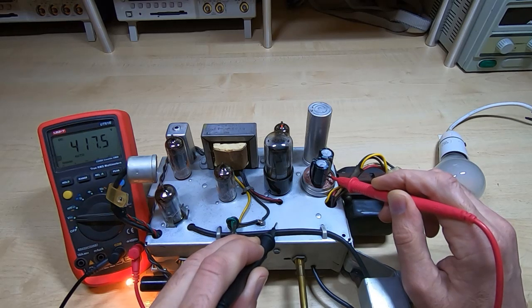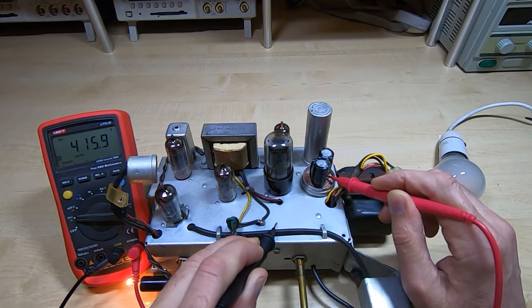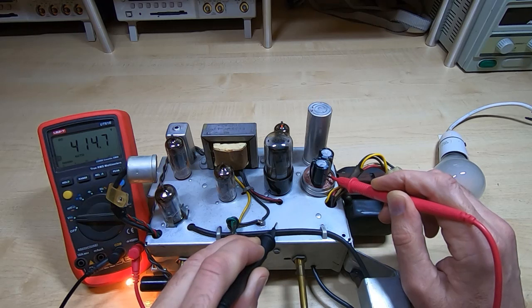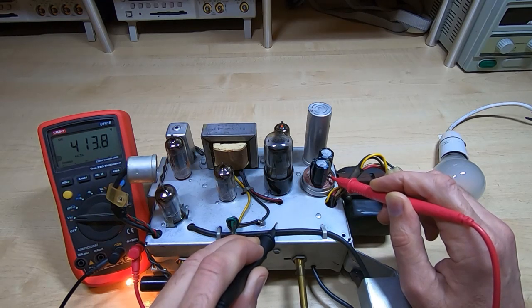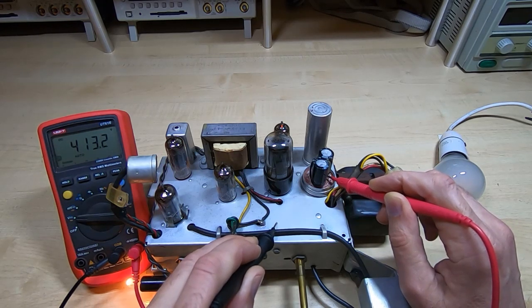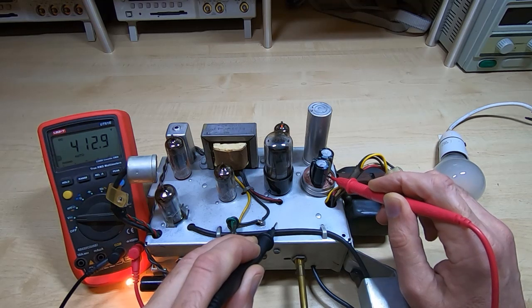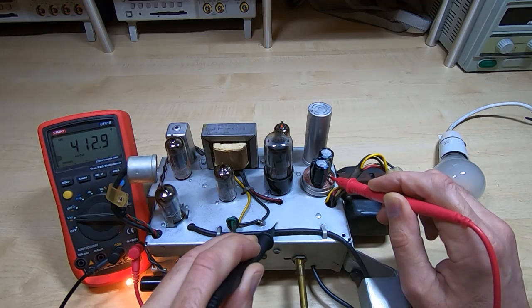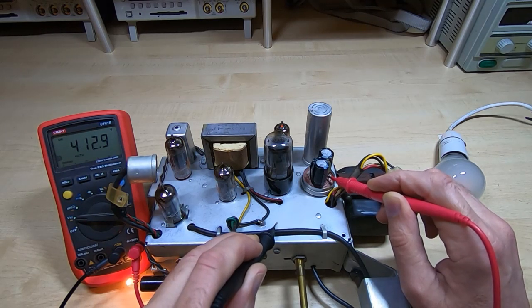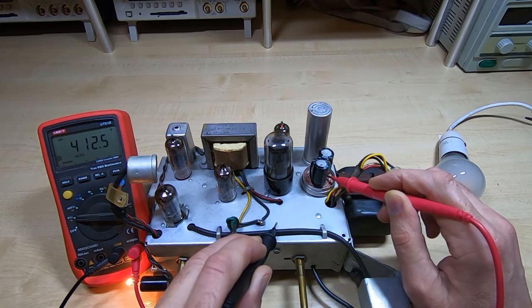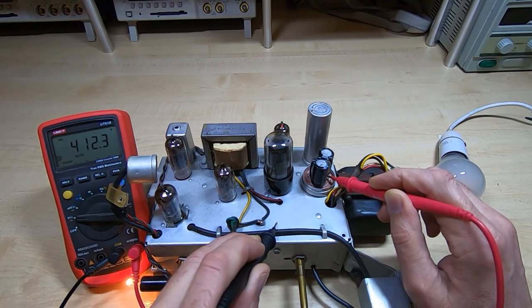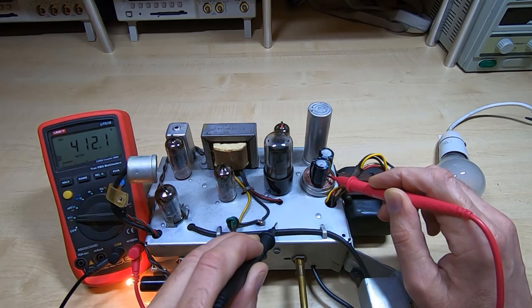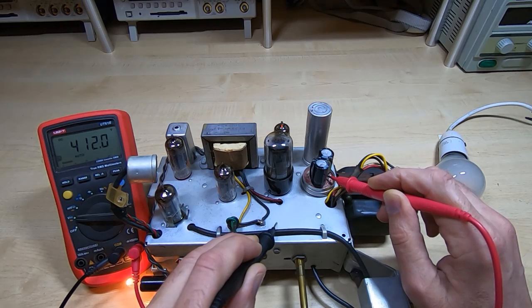That'll start to drop down again as the other tubes conduct and start drawing current, but if it suddenly starts to drop down or if the dim bulb tester suddenly gets a lot brighter we know we've got an issue. So all the tubes are glowing. Voltage is stabilizing.